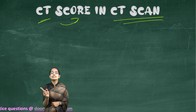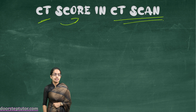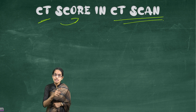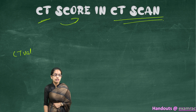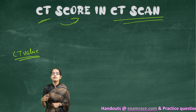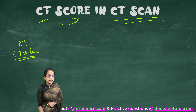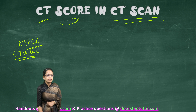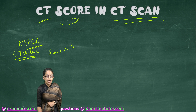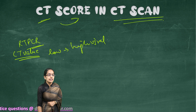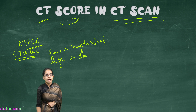The CT score is not the same as the CT value in an RT-PCR test. In an RT-PCR test, the CT value refers to the cycle threshold value — the number of cycles done to identify the presence of the virus. A low CT value in RT-PCR indicates a higher viral load, while a high CT value indicates a lower viral load.